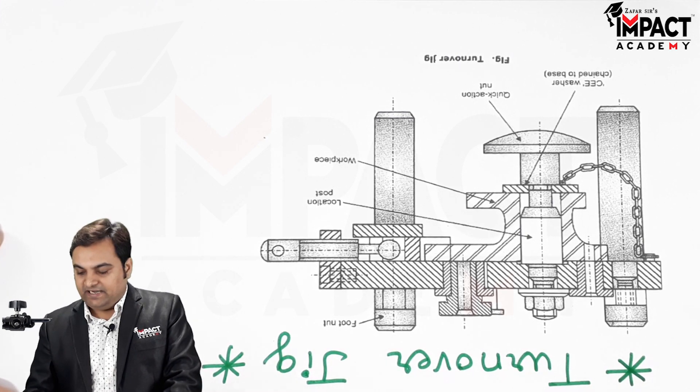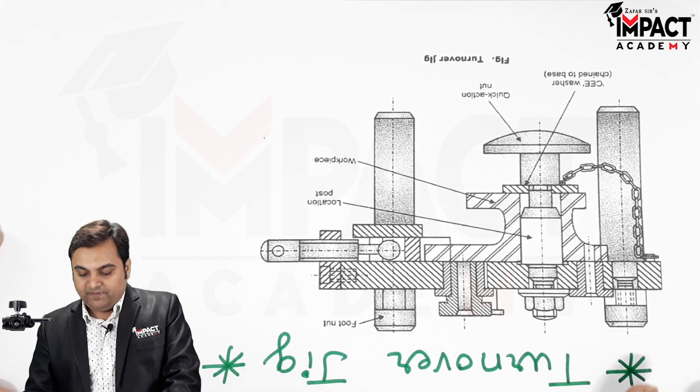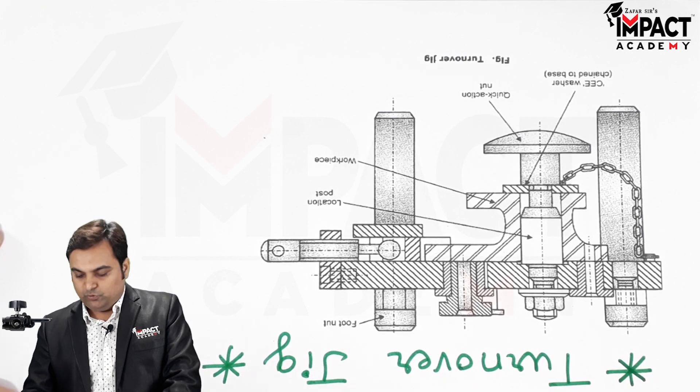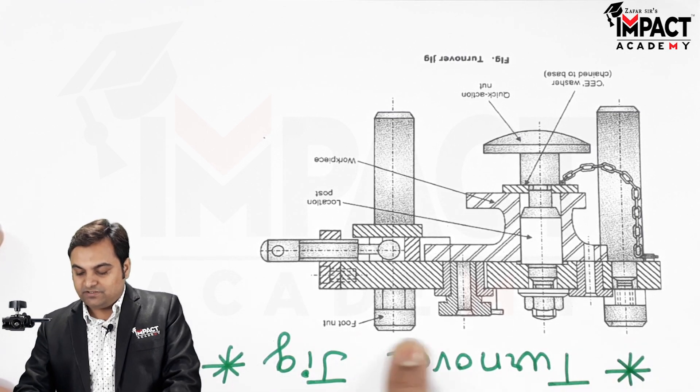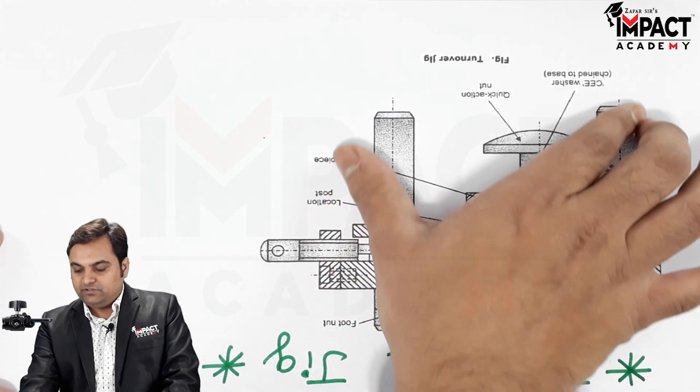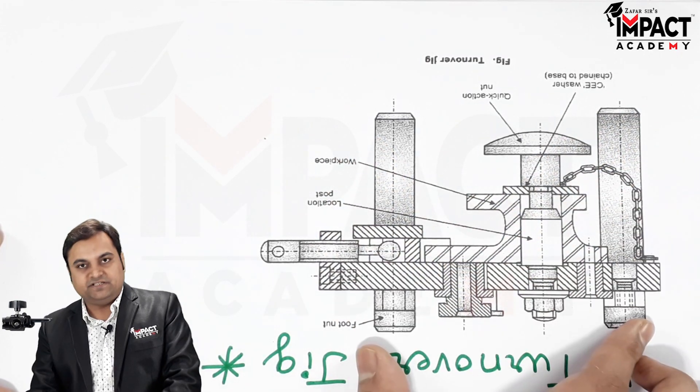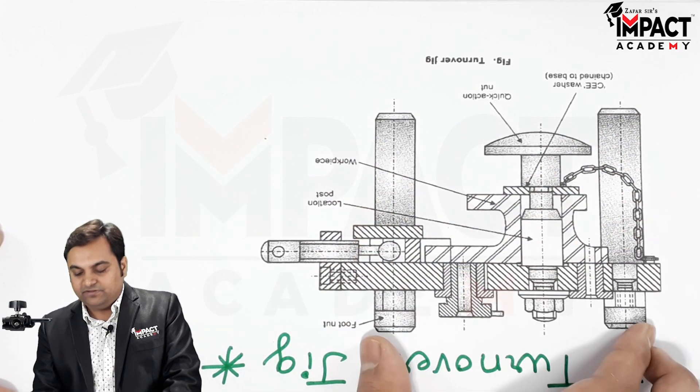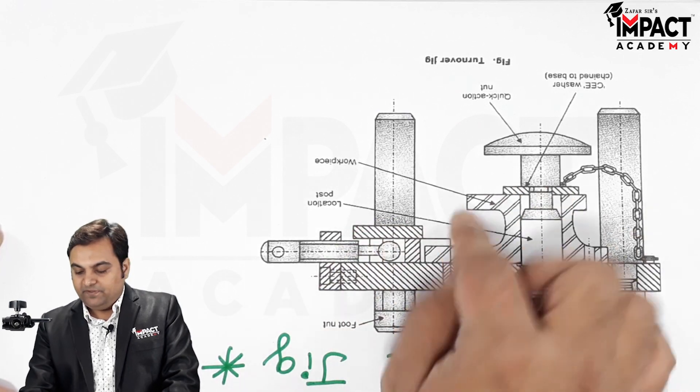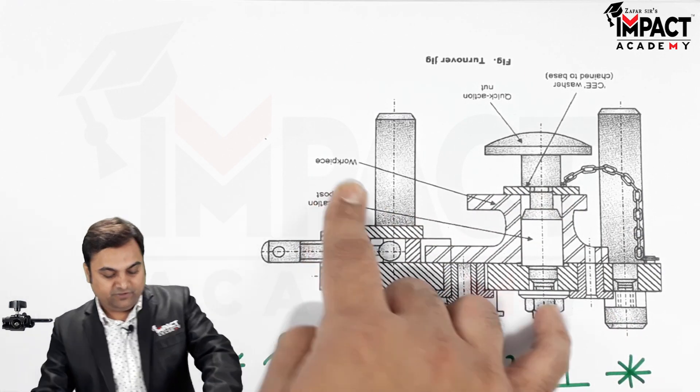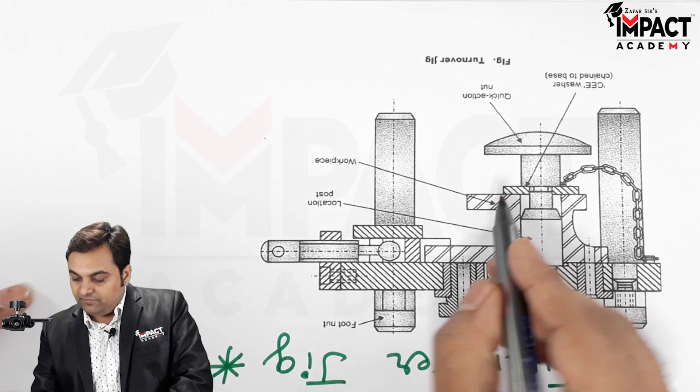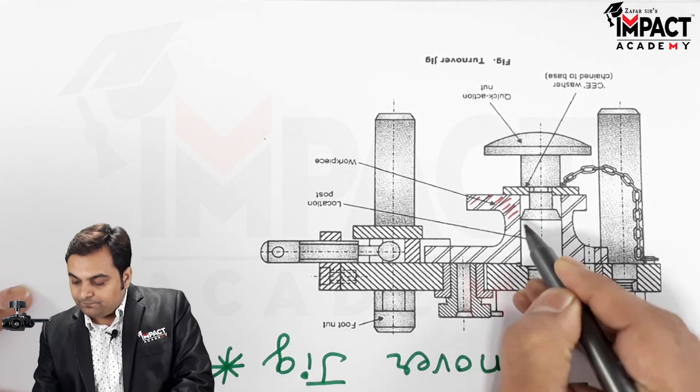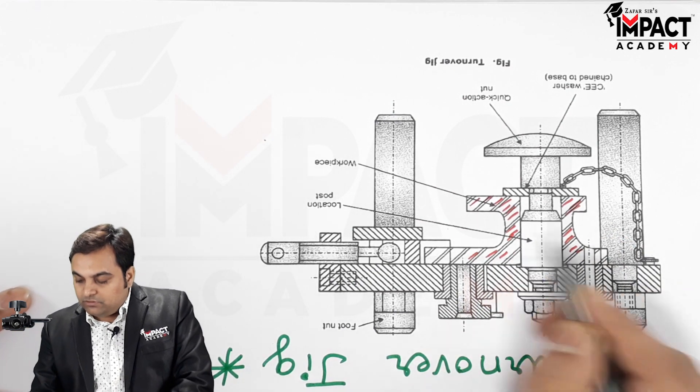Now what happens during the operation is that we have to load the workpiece. How does the workpiece get loaded? Here there are footnuts given. So at first, this is the orientation, it means the jig is kept in this way on the footnuts. The workpiece is placed, this is the workpiece as we see over here.